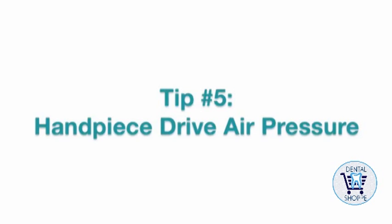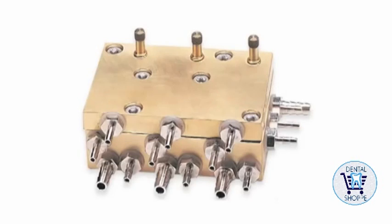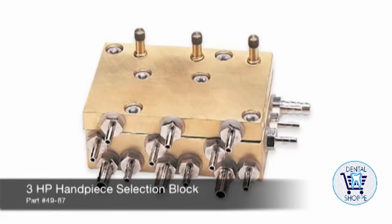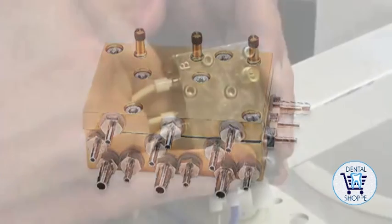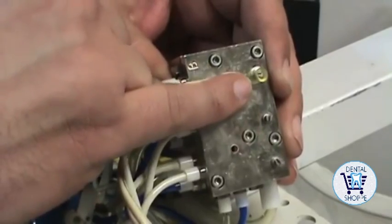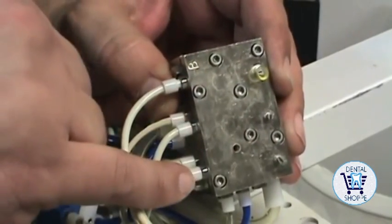Manufacturers typically suggest that you have the drive air pressure set at 30 pounds per square inch. On most units you would set your drive air pressure on the hand piece selection block, similar to the block pictured here. Normally anything in excess of 40 PSI would only cause damage to the turbine without increasing performance.